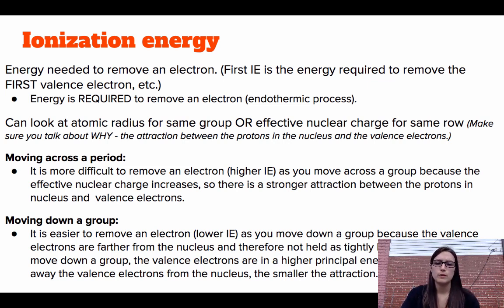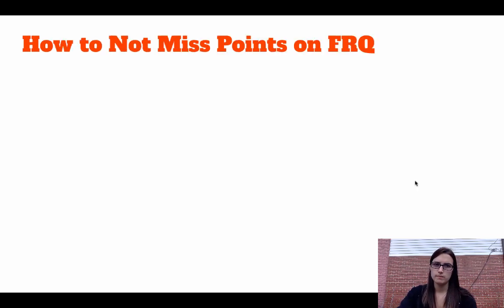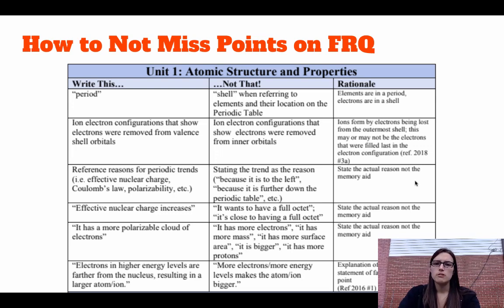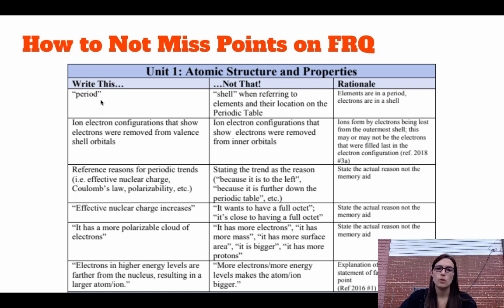The biggest thing with periodic trends is making sure you talk about the why — you need to explain it to get points on free response. For free response, remember: a row on the periodic table can be called a 'row' or 'period.' For electron configurations of ions, electrons are removed from the highest value of n — so for transition metals, electrons come out of the s orbital first.